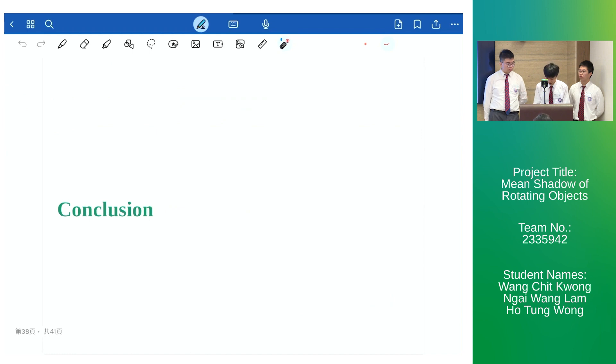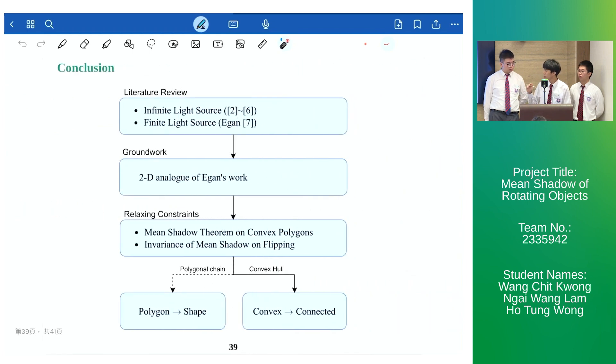Now to conclude, the flowchart below summarizes the outline of our research. We begin with the 2D analog of Egan's work and gradually relax the constraints imposed on the position of the light source and the rotation center. In the meantime, we achieved the mean shadow theorem on convex polygons, which gives a closed-form expression for the mean shadow of convex polygons. We also proved the invariance of mean shadow on flipping light sources about rotation centers. In the end, we extend our work from polygons to curved shapes by proposing conjectures involving approximation by polygonal chain. We also removed the convex conditions on the shapes to all connected shapes by considering the convex hull of the shapes.